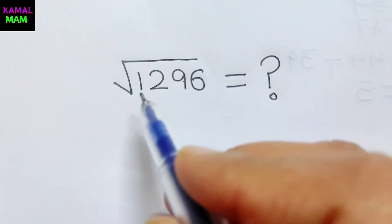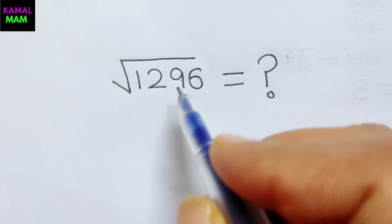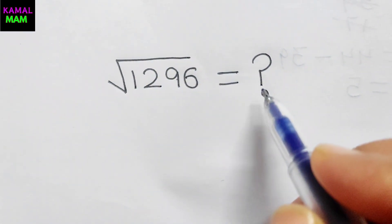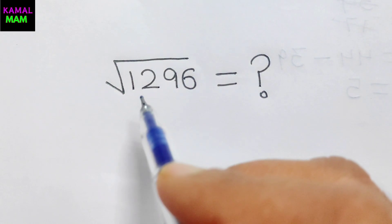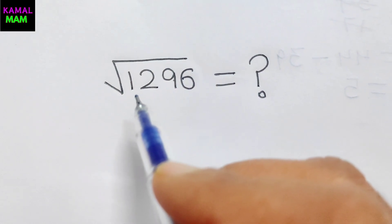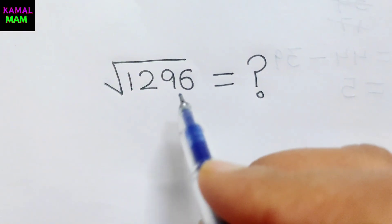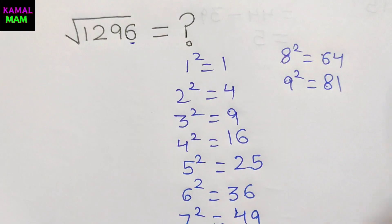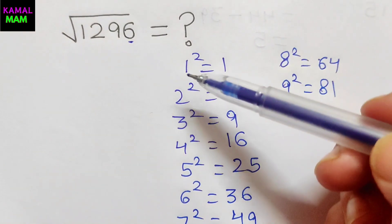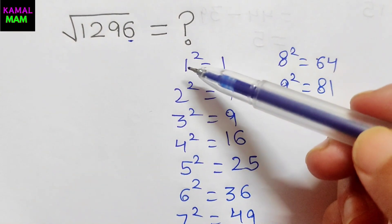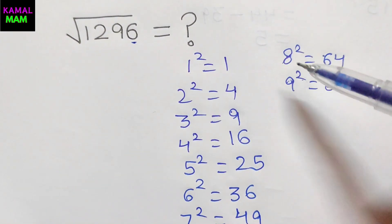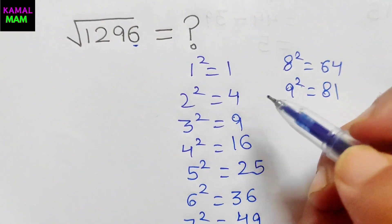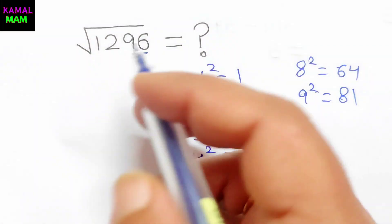The square root of 1296 equals what? I have a nice trick to solve the square root of any number in just seconds. So we already write down the value of 1296 whole square.